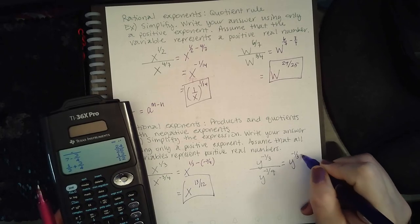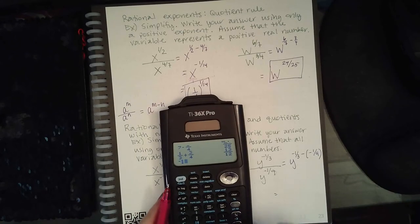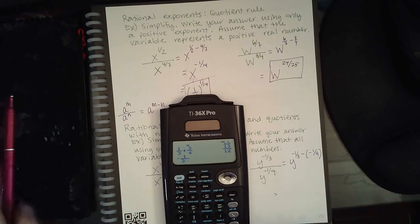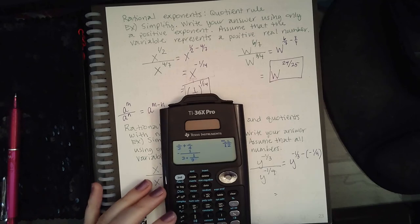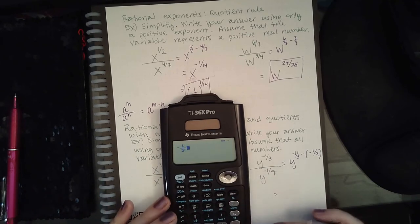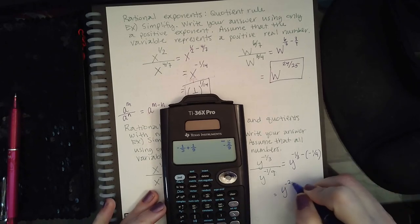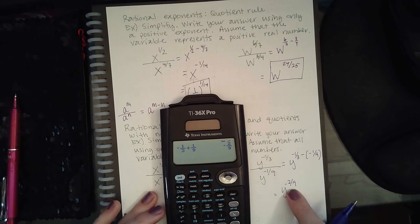Let's see, over here we have top exponent minus a bottom negative. So then that becomes negative 1/3... negative and negative actually means plus 1/9. Oh, I'm doing it again. Negative 1/3 plus 1/9, and I get y to the negative 2/9.